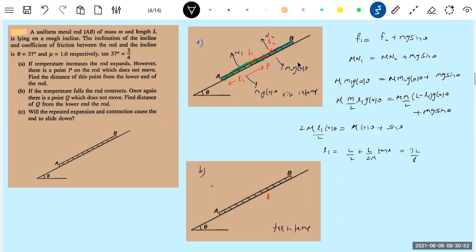Now, there is a point. If the temperature falls, the rod contracts. Once again, there is a point Q which does not move. Find the distance of Q from the lower end. We have to calculate this distance. Less interested in learning, more interested in other things. Now, what will be the AQ? AQ will move up, so the friction will act down the incline.